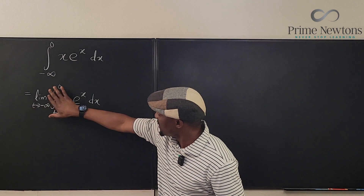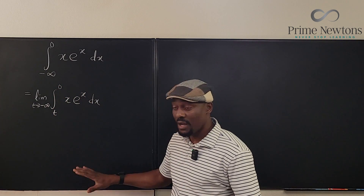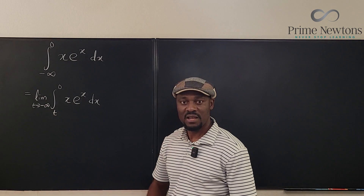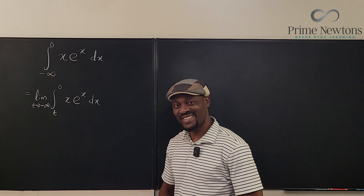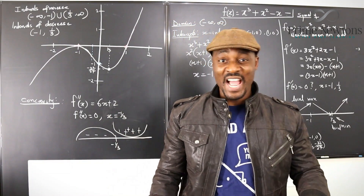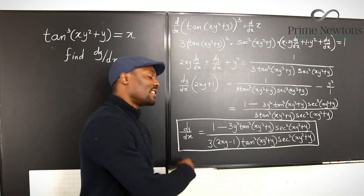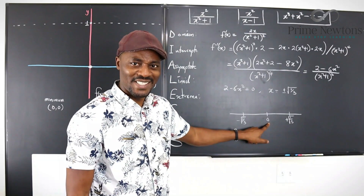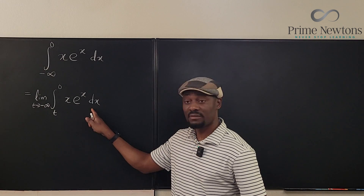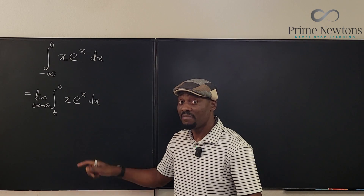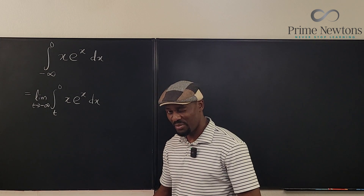We're going to focus on this: we will take the integral, and when we're done, we're going to take the limit as t approaches negative infinity to get our answer. The recommended method to integrate this is integration by parts.